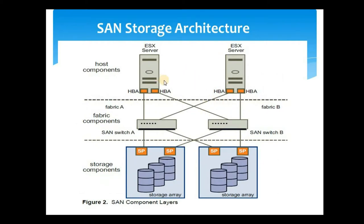In a typical SAN storage architecture, there are two servers, each with two HBAs, and each HBA is connected to both Fabric A and Fabric B. In the storage layer, from Fabric A there are two connections — one to the SP of one storage array and another to the SP of a second storage array — with similar connections from Fabric B. These are just the physical connectivity aspects; additional configurations such as zoning in SAN switches and registration of hosts in the storage component must also be completed to establish a successful connection between the storage array and the host layer.